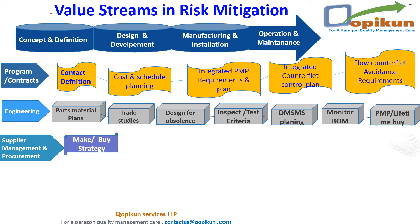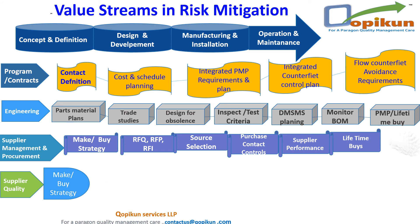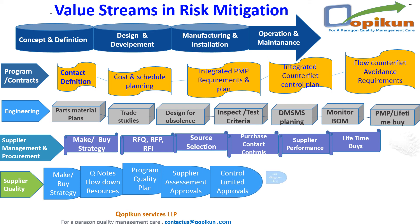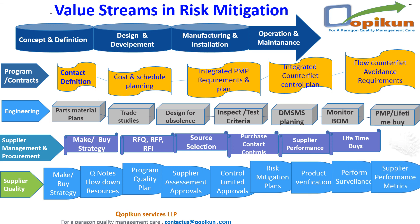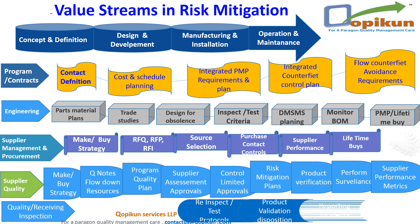Supplier management and procurement: 0.1 make or buy strategy, 0.2 RFQ/RFP/RFI, 0.3 source selection, 0.4 purchase contract controls, 0.5 supplier performance, 0.6 lifetime buys. Supplier quality: 0.1 make or buy strategy, 0.2 Q-notes flow down resources, 0.3 program quality plan, 0.4 supplier assessment approvals, 0.6 risk mitigation plans, 0.7 product verification, 0.8 performance of liens, 0.9 supplier performance metrics. Quality/receiving inspection: 0.1 re-inspect/test protocols, 0.2 product validation disposition, 0.3 reporting incidents, 0.4 inventory control and segregation.